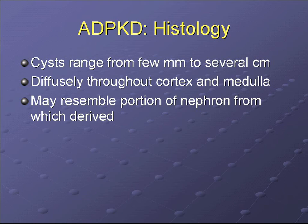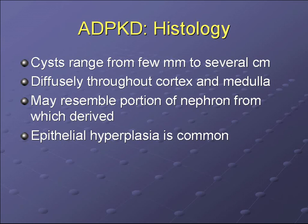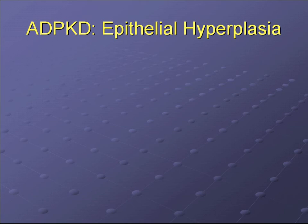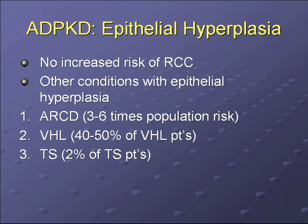Cysts range from a few millimeters to 10 centimeters or larger, and are diffusely spread throughout the cortex and medulla, possibly derived from any portion of the nephron. Epithelial hyperplasia is a common feature, also found in acquired renal cystic disease, VHL, and tuberous sclerosis. However, in contrast to those disorders, there is no increased risk of RCC in polycystic kidney disease. In the other disorders, particularly VHL and acquired renal cystic disease, there is a very significant increased risk of RCC.